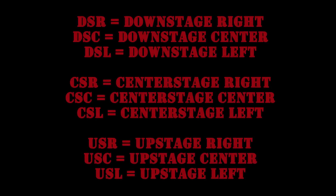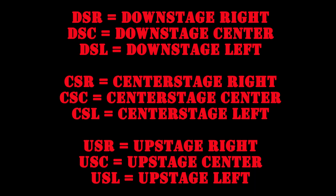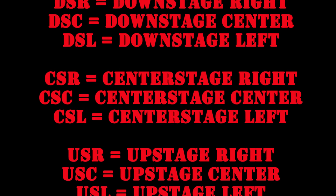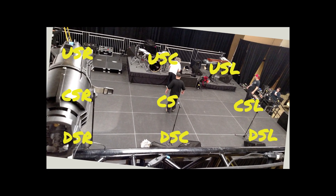There are also three-letter abbreviations that are even more specific but just as simple. DSR is downstage right, DSC is downstage center, DSL is downstage left, and it goes on like that. You might also see mid stage in place of center stage — for example, MSR is mid stage right, the same position as center stage right. To put this into real-life context, here's what it looks like on a real stage.